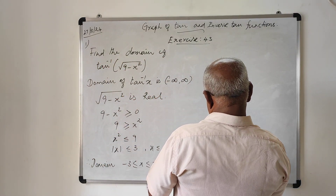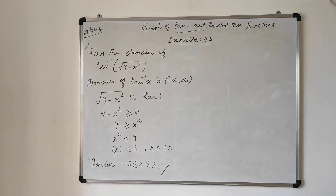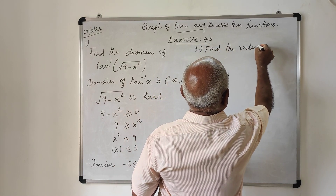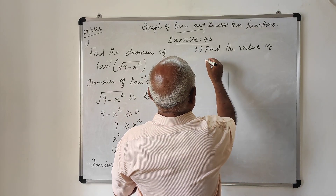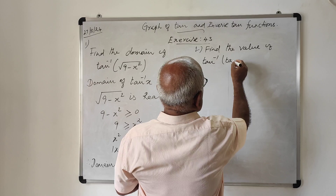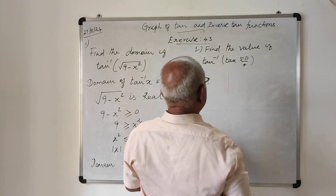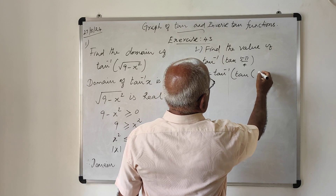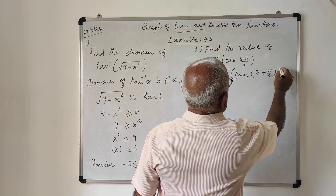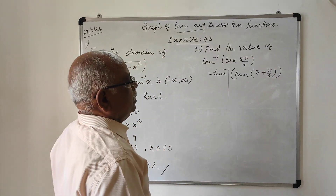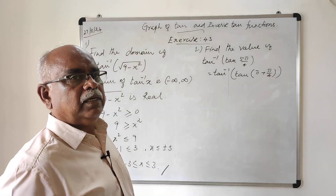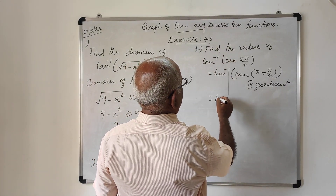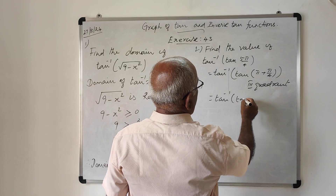The next problem: find the value of tan⁻¹(tan(5π/4)). We can express 5π/4 as π + π/4, which is of the form tan(180° + θ). This is in the third quadrant where tangent is positive. Therefore, tan(5π/4) = tan(π/4). So this becomes tan⁻¹(tan(π/4)). Since π/4 belongs to the interval (-π/2, π/2), the value of this function is π/4.